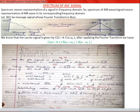X(0) is its peak value, ranging from minus ω_m to plus ω_m. We know that the carrier signal is given by C(t) = A·cos(ω_c·t). After applying the Fourier transform, we have C(ω), which is the corresponding frequency domain representation of C(t).